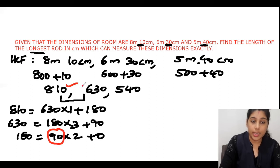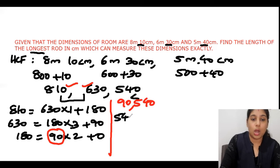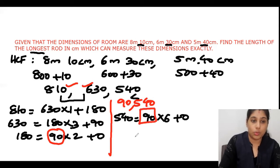Now we will do this with 90 and 540 together. 540 is greater, so 540 equals 90 times 6 plus 0. So the HCF is 90.